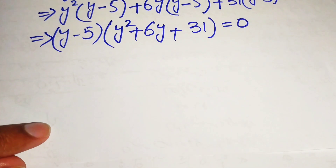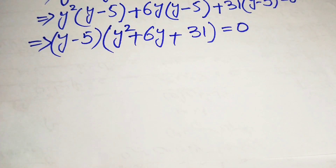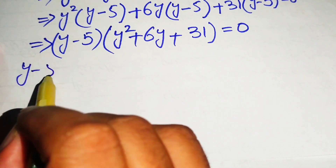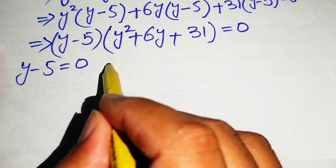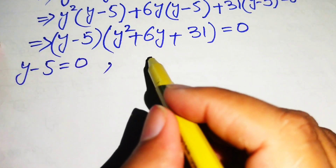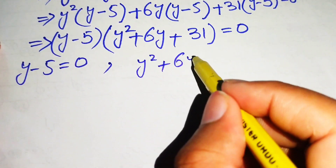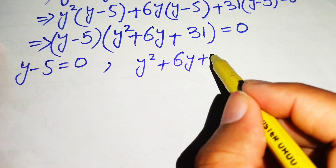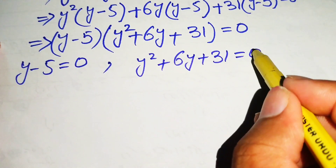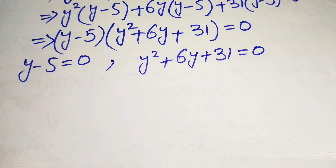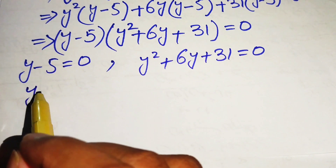We now have two factors multiplied together, giving us two cases. Case 1: y minus 5 equals 0. Case 2: y squared plus 6y plus 31 equals 0.